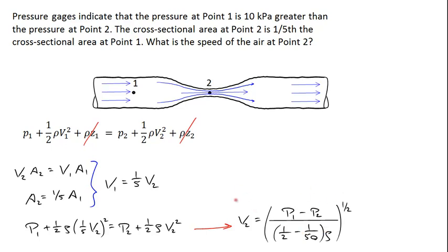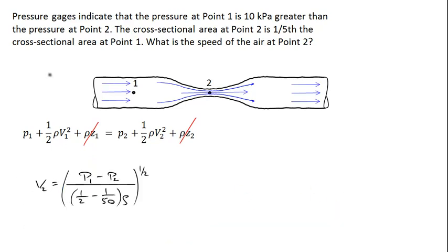And take the square root of that and I solve for V2. So if I plug numbers in with units what I come up with is ten thousand pascal divided by this ratio 1/2 - 1/50 times ρ which is one kilogram per cubic meter. I didn't specify the density in the problem statement but one kilogram per cubic meter is reasonable for air.